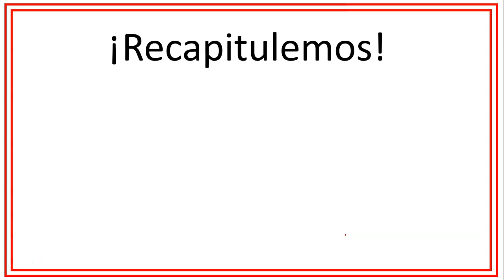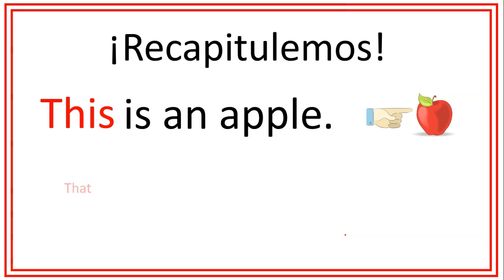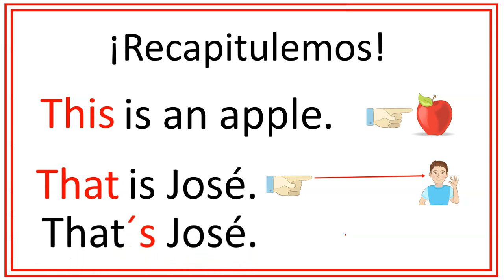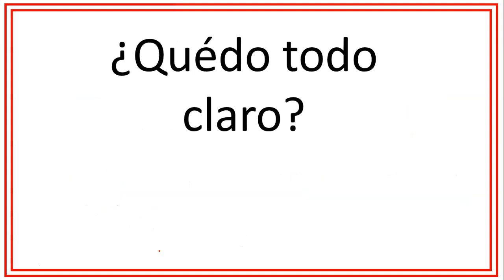Recapitulemos la lección del día de hoy. Vimos la palabra this, que se utiliza para identificar objetos, personas o lugares que están cerca. Por ejemplo, this is an apple. Y utilizamos that para identificar objetos, personas o lugares que están lejos. Por ejemplo, that is José. No se les olvide que vimos la contracción that's, que es la contracción de that con el verbo to be is — es lo mismo decir that is José que that's José. ¿Tienen alguna duda? Por favor, si tienen alguna duda, comentario o sugerencia, escriban en la sección de comentarios y estaré leyendo todos. Procuraré dar respuesta e incluir lo que solicitan en los futuros videos.